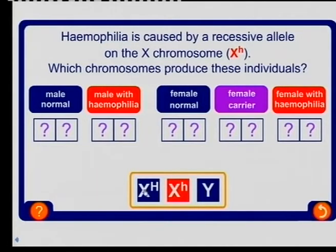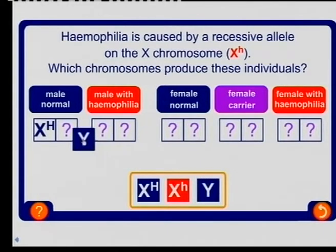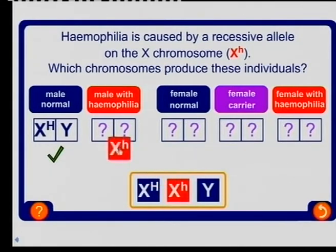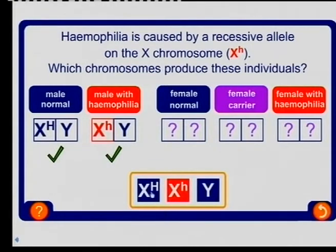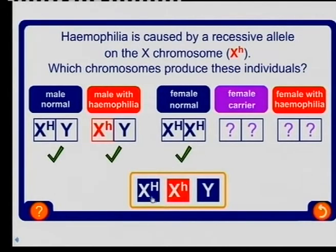Remember, hemophilia is a recessive characteristic. A normal male has an X chromosome — a normal X chromosome — and his Y chromosome. A man with hemophilia, because he has one X chromosome, must have the affected chromosome and his Y chromosome — that is, the X with the recessive gene, and then his normal Y chromosome. Females have two X chromosomes, and since she is normal, she must have two normal X chromosomes.